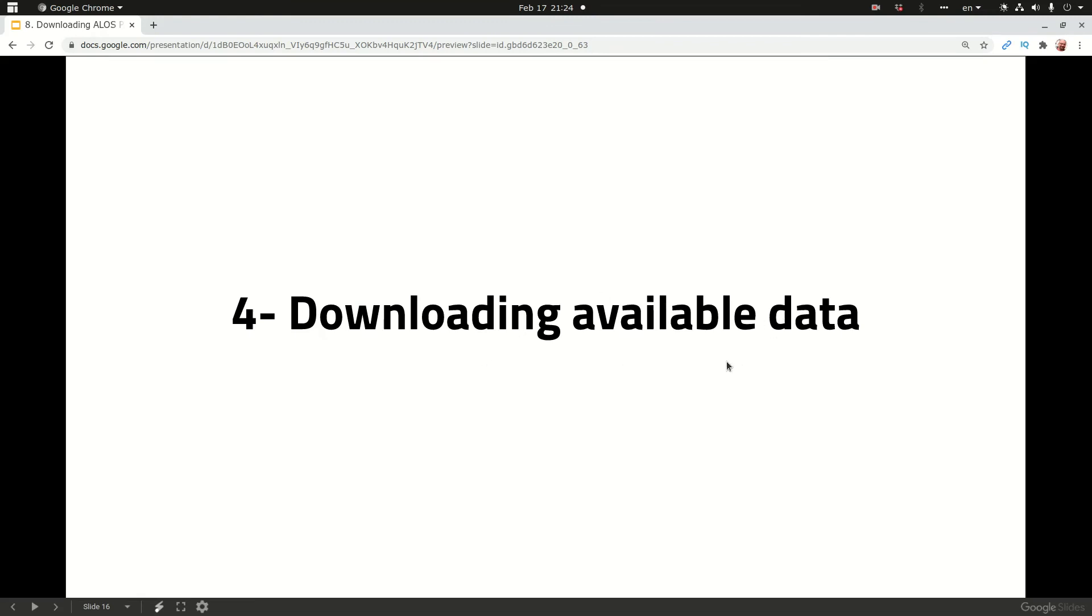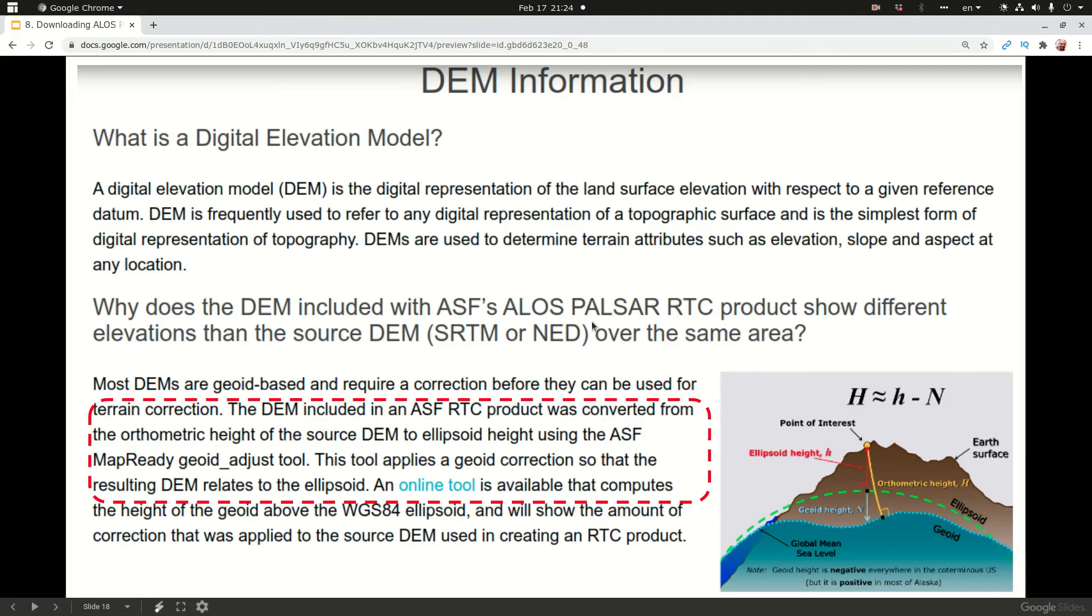We have downloaded and merged our data. We go to the next slide, which is was it worth it. To understand whether it was worth it or not, this is the DEM information which is pulled from ASF Alaska Satellite Facility page. If you read that paragraph, the DEM included in an ASF RTC product that we have just downloaded was converted from the orthometric height of the source DEM, which is basically SRTM or NED for North America, to ellipsoid height using the ASF MapReady geoid adjust tool.